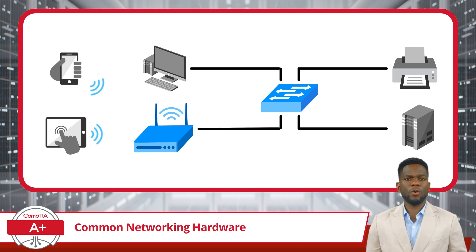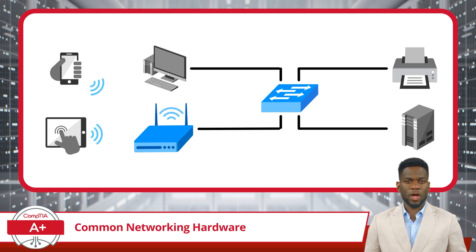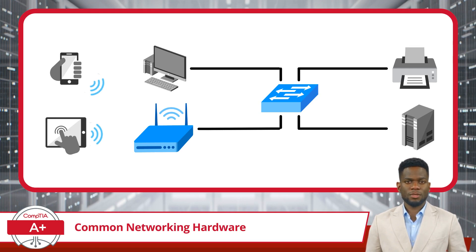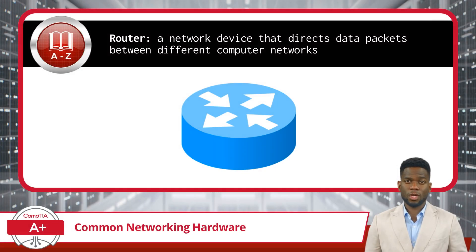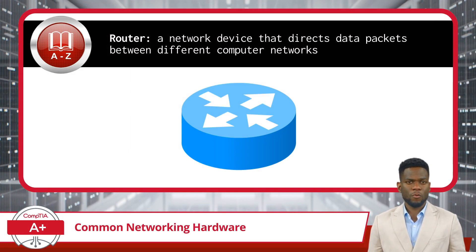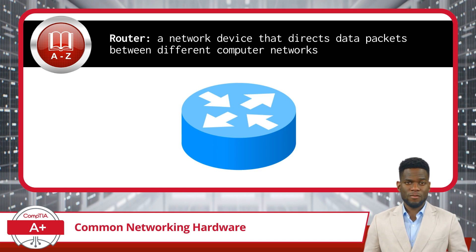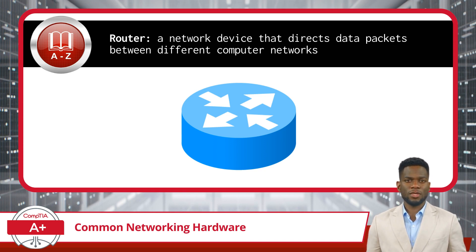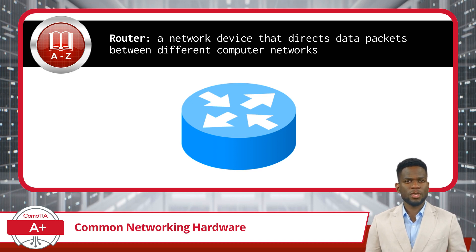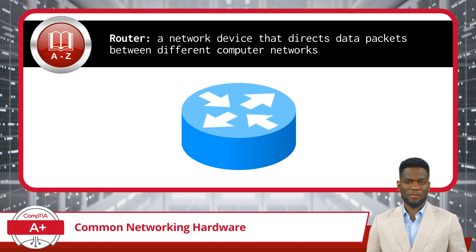So if an access point sounds a lot like a switch, you are right. An access point is just a wireless version of a switch that provides local device connectivity. By now you may be realizing that computer networks are basically a digital highway, connecting devices together to facilitate communication and resource sharing. Just as highways have intersections and signs to guide traffic, networks have switches to direct data packets. But switches are not the only devices used to control traffic.